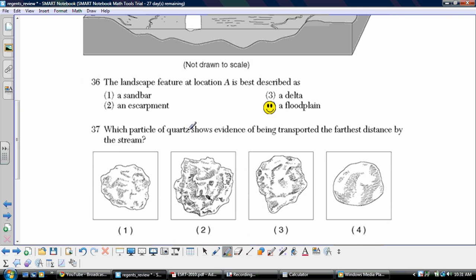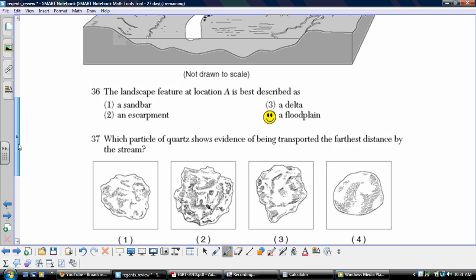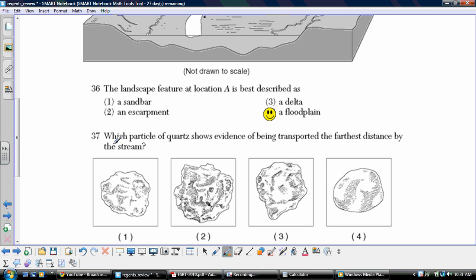Number 37, it says which particle of quartz shows evidence of being transported the farthest distance by the stream? So if we're talking about transporting it, stream transport, we're going to get stream abrasion. And one of the things that we should remember is that the more and more abrasion happens, the more rounded our particles are going to get.